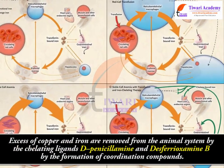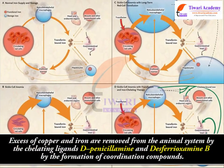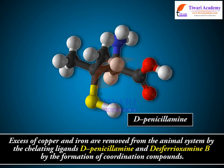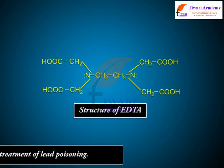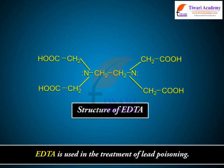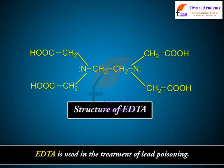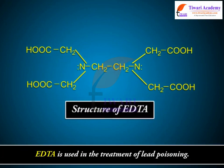Excess copper and iron are removed from the animal system by the chelating ligands D-penicillamine and desferioxamine B through the formation of coordination compounds. EDTA is used in the treatment of lead poisoning.